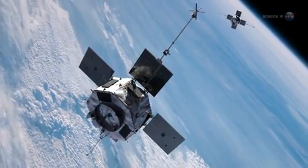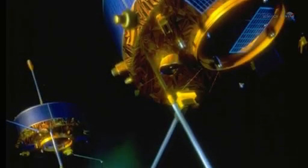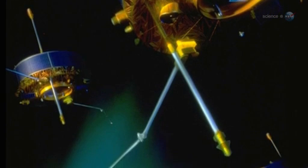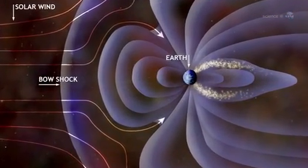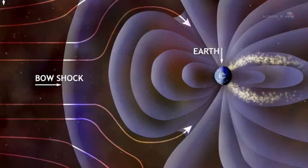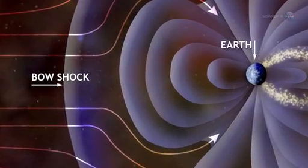Observations by NASA's Themis spacecraft and Europe's cluster probes suggest that these magnetic portals open and close dozens of times each day. They're typically located a few tens of thousands of kilometers from Earth, where the geomagnetic field meets the onrushing solar wind.